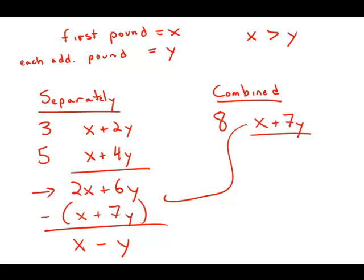And because we know that X is greater than Y, we know this is a positive number. Therefore, mailing them separately costs more. Which method is cheaper? The combined method is cheaper, and the cost saved is X minus Y. And this is answer choice A.